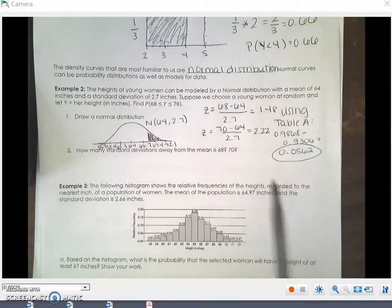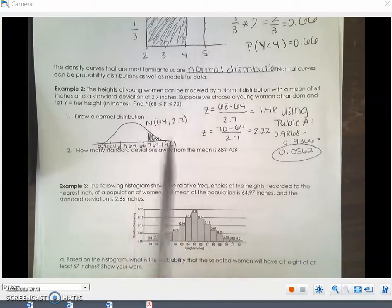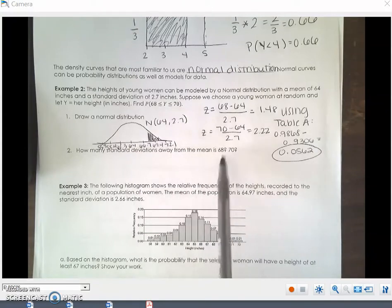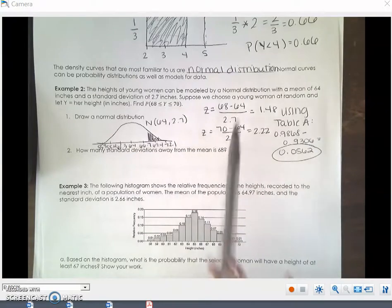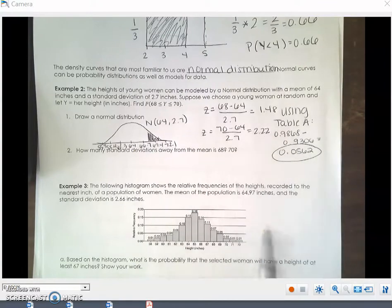That tells us the probability that a randomly selected young woman has a height between 68 and 70 inches is 0.06. So this is another example of a density curve, but this time we're using a normal distribution. For part two, it says how many standard deviations away is the mean of 68 and 70. These are standard deviations: 1.48 and 2.22 respectively. We will do example three when you get to class.